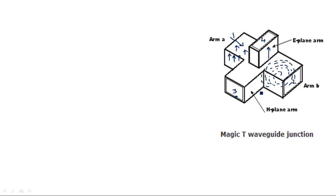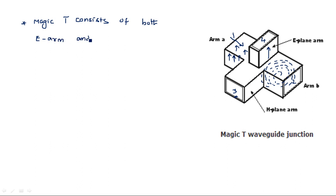In this way, both the E-arm and H-arm are connected to the single waveguide to form the Magic T. Magic T consists of both E-arm and H-arm — it is a combination of two waveguide components: E-plane T-junction and H-plane T-junction. Whatever characteristics and applications apply to E-plane T-junction and H-plane T-junction, both are applicable with respect to Magic T-junction.